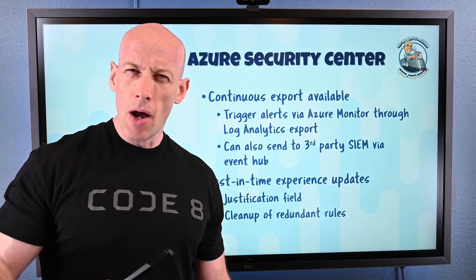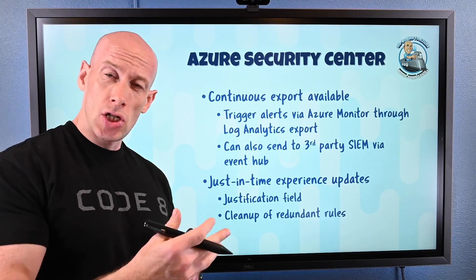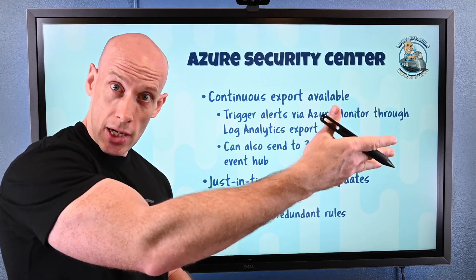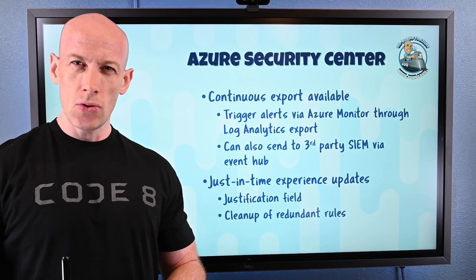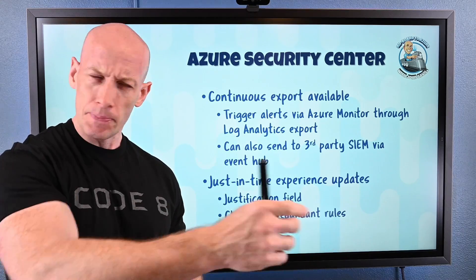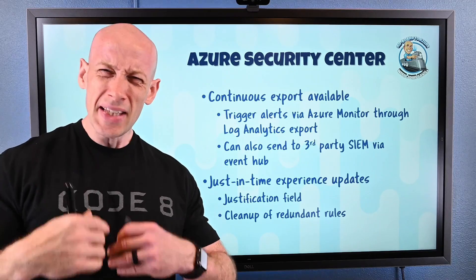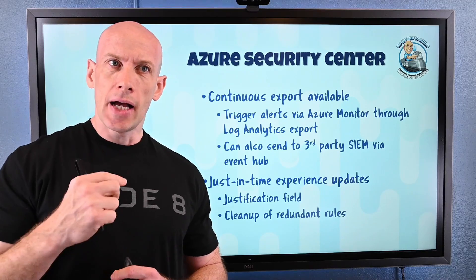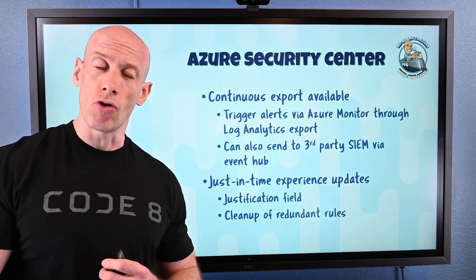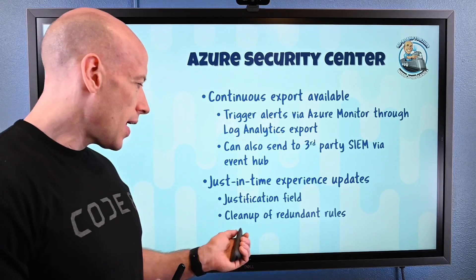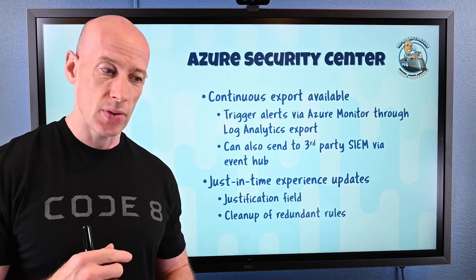Additionally, for those just-in-time experiences — think about wanting to get to a virtual machine — you use JIT to enable an RDP or SSH connection to it. Now there's a justification field you can use that helps in logging to see why it was done. One of the pain points in the past was that just-in-time access works by modifying network security groups, and it would leave the old rules around. Well, now it cleans those up, so those redundant rules will be removed, making it a lot neater.